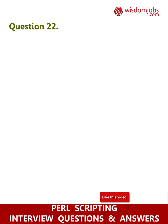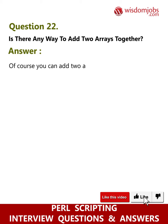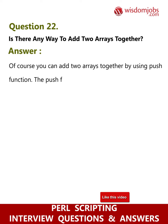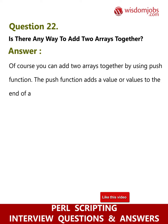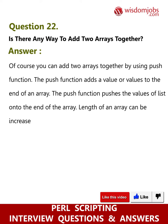Question 22: Is there any way to add two arrays together? Answer: Of course — you can add two arrays together by using the push function. The push function adds a value or values to the end of an array. It pushes the values of a list onto the end of the array, and the length of the array is increased by the length of the list.